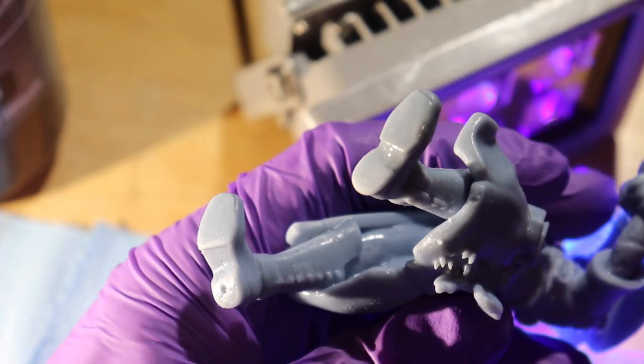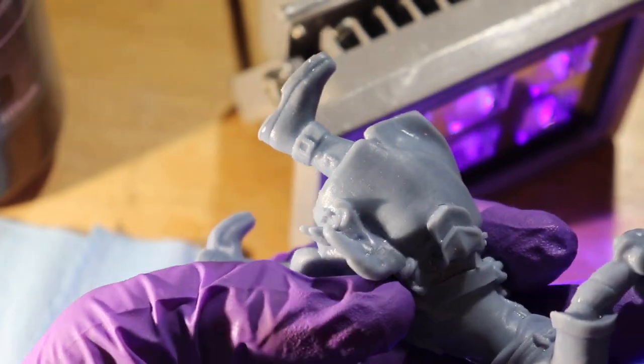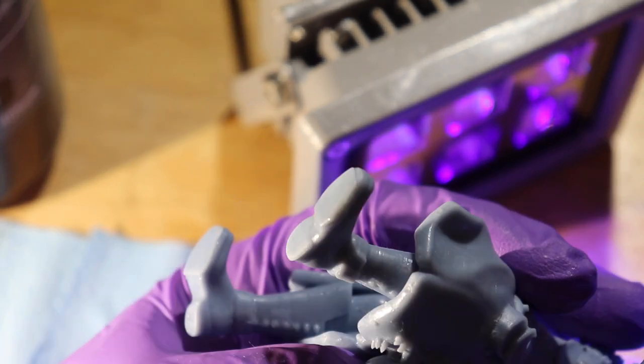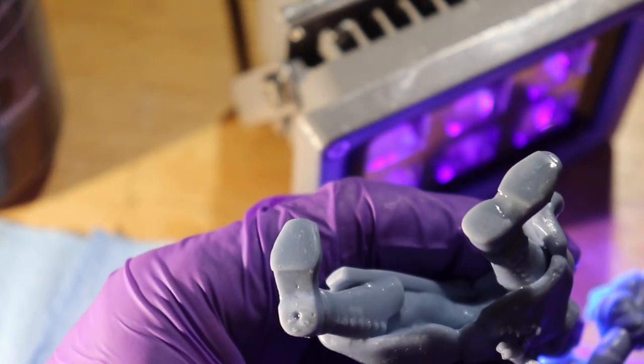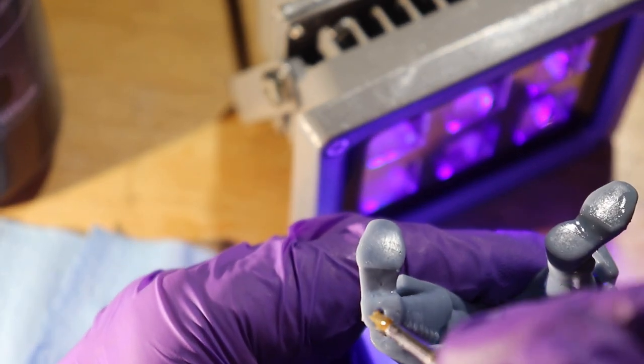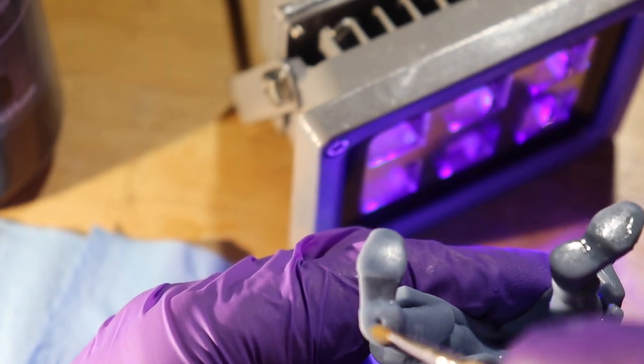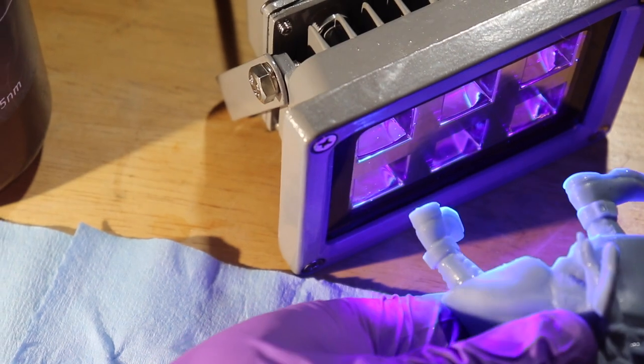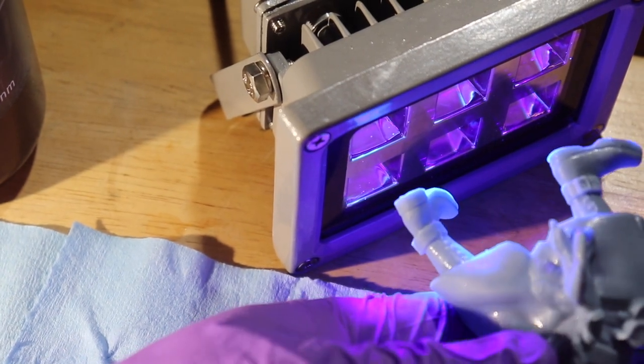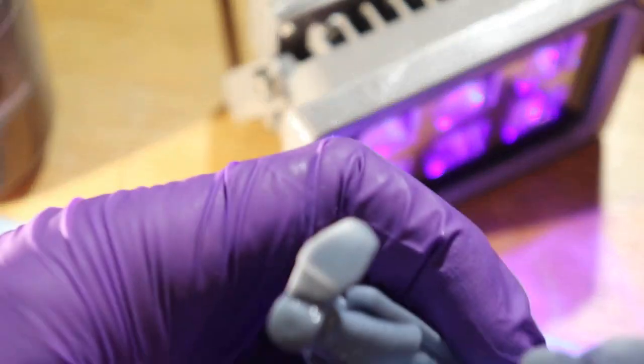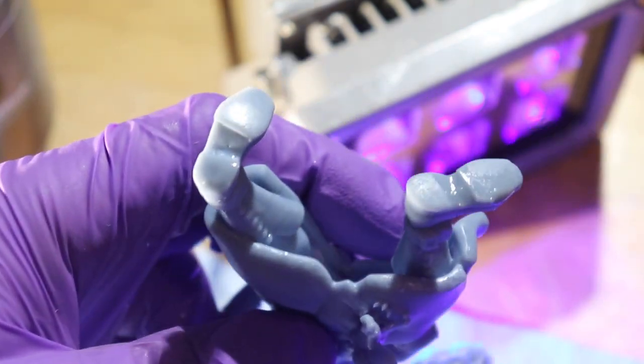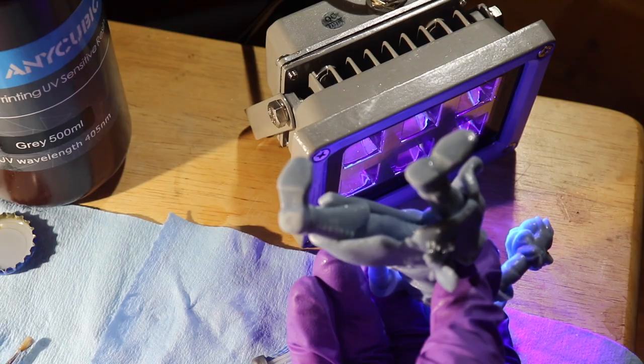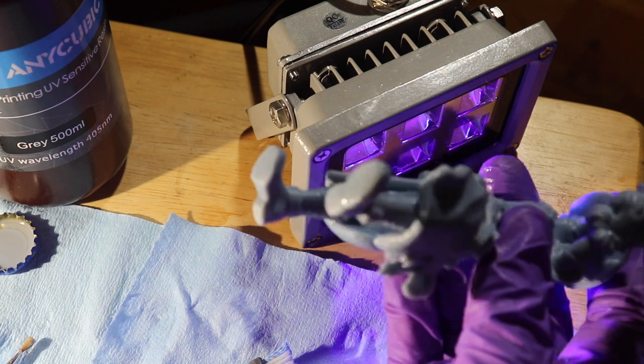Then I notice right here on the boot, I did put a drain hole because I do print my prints hollow, and I want to actually fix that drain hole. So I'll put some resin in there and do the same process and cure that. Do this a few times, sand it, and you will not even tell there was a drain hole, as you can see right there.